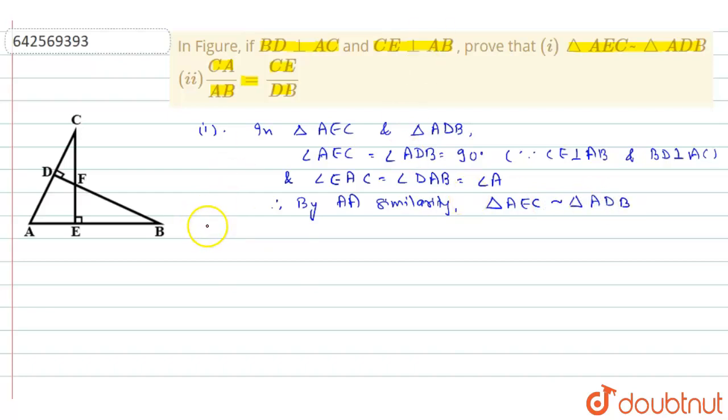Now for the second part, triangle AEC is similar to triangle ADB which implies CA by BA is equal to EC by DB. Now rearranging this, we may write CA by AB is equal to CE by DB. So the second part is also proved.